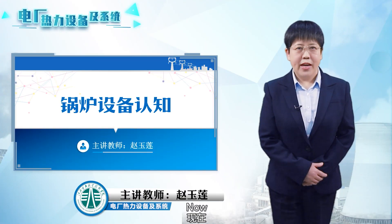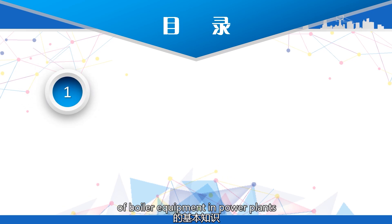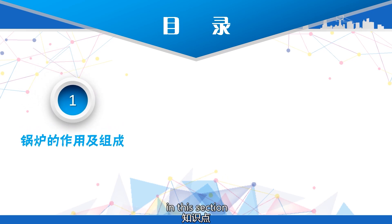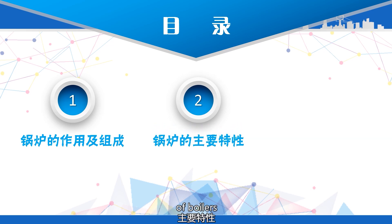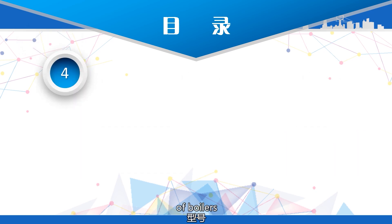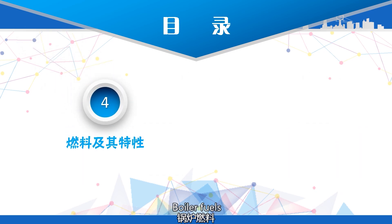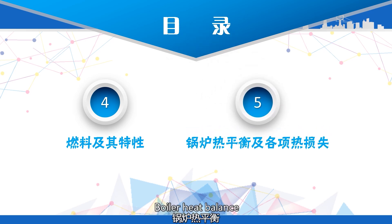Hello everyone. Now we will learn the basic knowledge of boiler equipment in power plants. The key points in this section are: first, the function and composition of boilers; second, the main characteristics of boilers; third, the classification and models of boilers; fourth, boiler fuels and their properties; fifth, boiler heat balance and various heat losses.